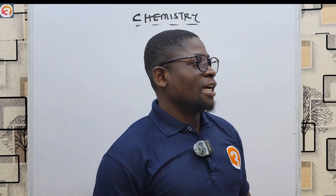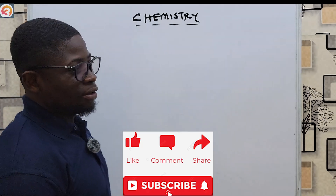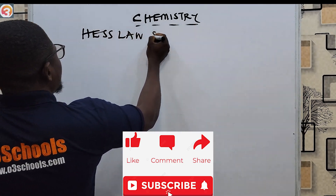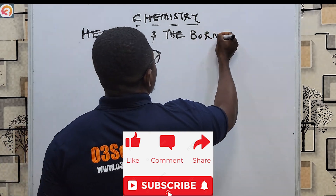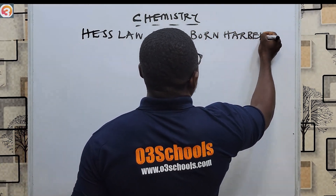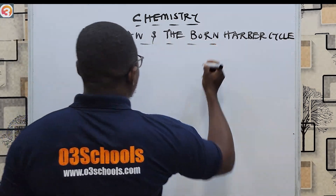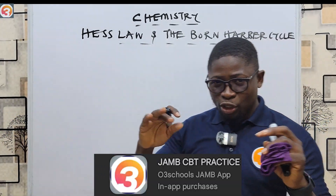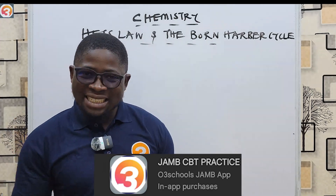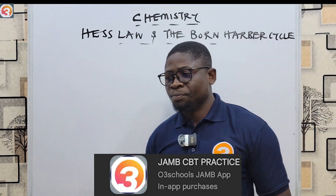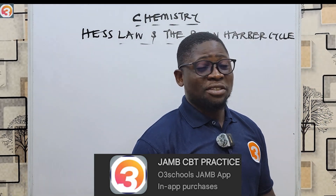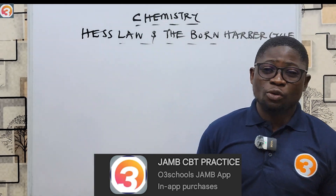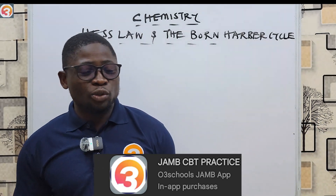Hello guys and welcome back to another episode of chemistry. Today we're going to continue our study on chemical energetics, looking at Hess's Law and the Born-Haber circle. One of the very important benefits of these classes is that the order for the textbook will be completely covered, and the important things you need to know are what we're going to be telling you. Please open your heart to learn and do not skip any part — watch this video to the end.